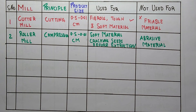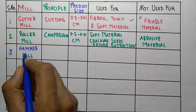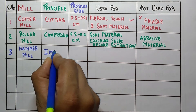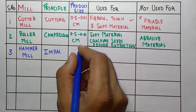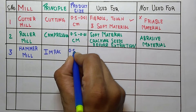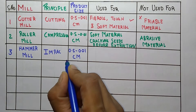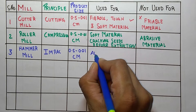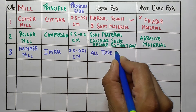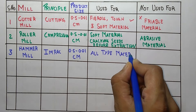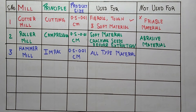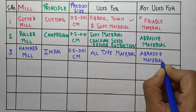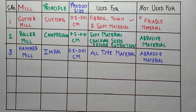The third one is hammer mill. The principle of hammer mill is impact. The product size range is the same, 0.5 to 0.01 cm. It is used for all types of materials. So if the question asks which mill is used for friable, fibrous, soft, or abrasive materials, the answer is hammer mill. It is not used for abrasive material — except abrasive material, it can be used for all materials.